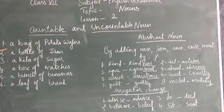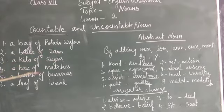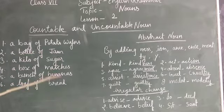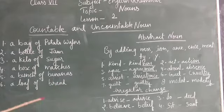Like a bag of potato peppers, a bottle of jam, a kilo of sugar, a box of matches, a bunch of bananas, a loaf of bread. These are the particular units of measures for particular nouns, countable or uncountable.